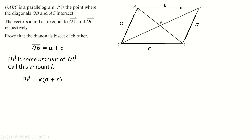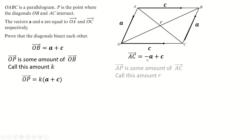We'll play exactly the same trick with A to C. We'll find the vector A to C, which is going to be minus A plus C. And now A to P is just some amount of that entire diagonal, so I'll call that some amount R. It doesn't matter what letters you choose, but it's R times (minus A plus C).